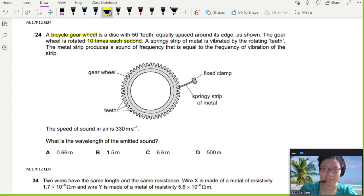So it makes 10 complete circles or cycles in one second. The springy tip of the metal is vibrated by the rotating teeth. The metal strip produces a sound of frequency that is equal to the frequency of vibration of the strip. So whenever this springy strip touches the teeth of the metal, it creates a continuous sound.